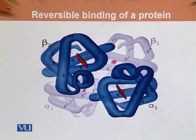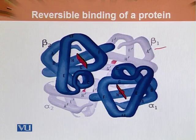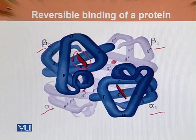This is the diagrammatic presentation of the hemoglobin structure. We can see here a beta chain, beta-2, alpha-1, and alpha-2. We can also see the heme group, which contains the ferrous iron.